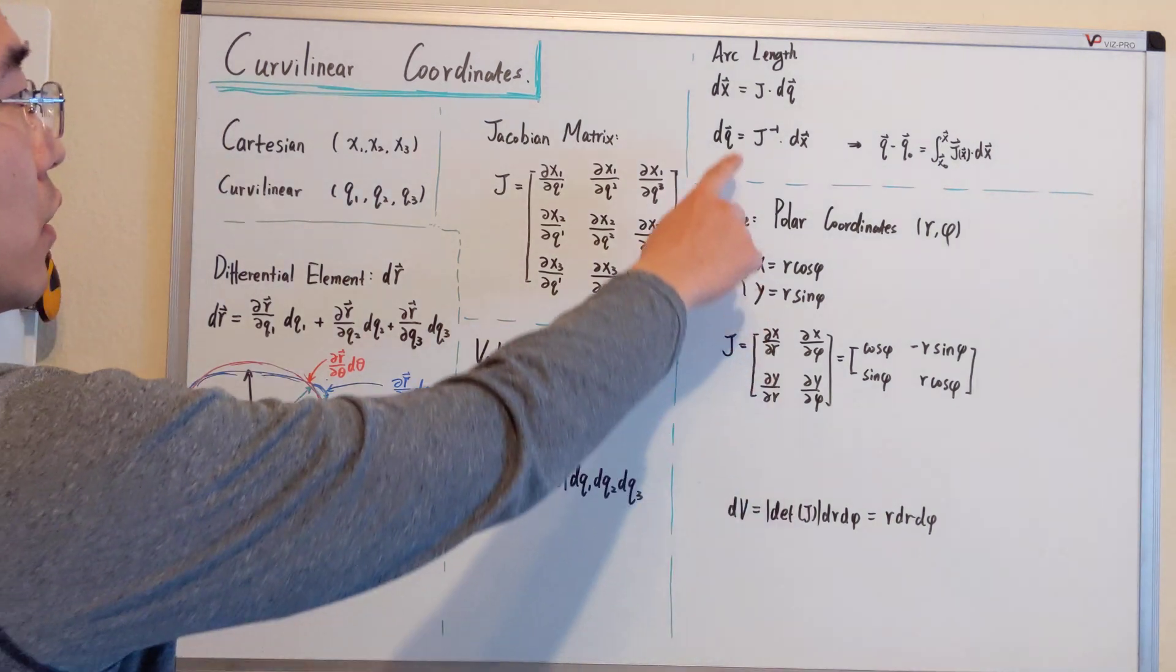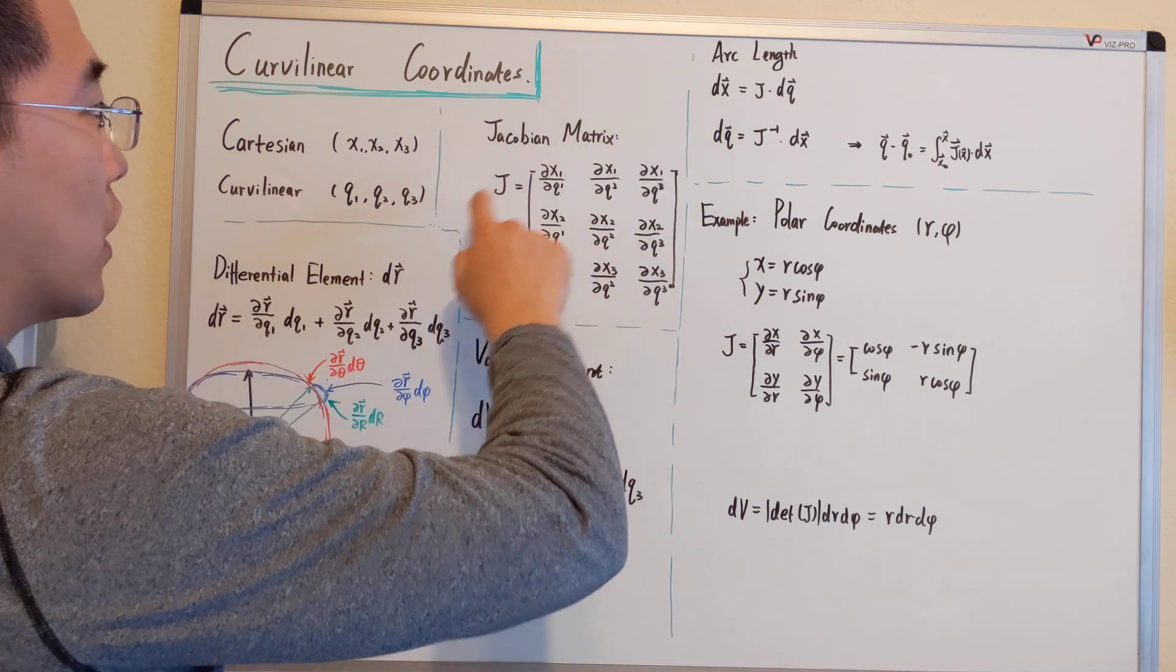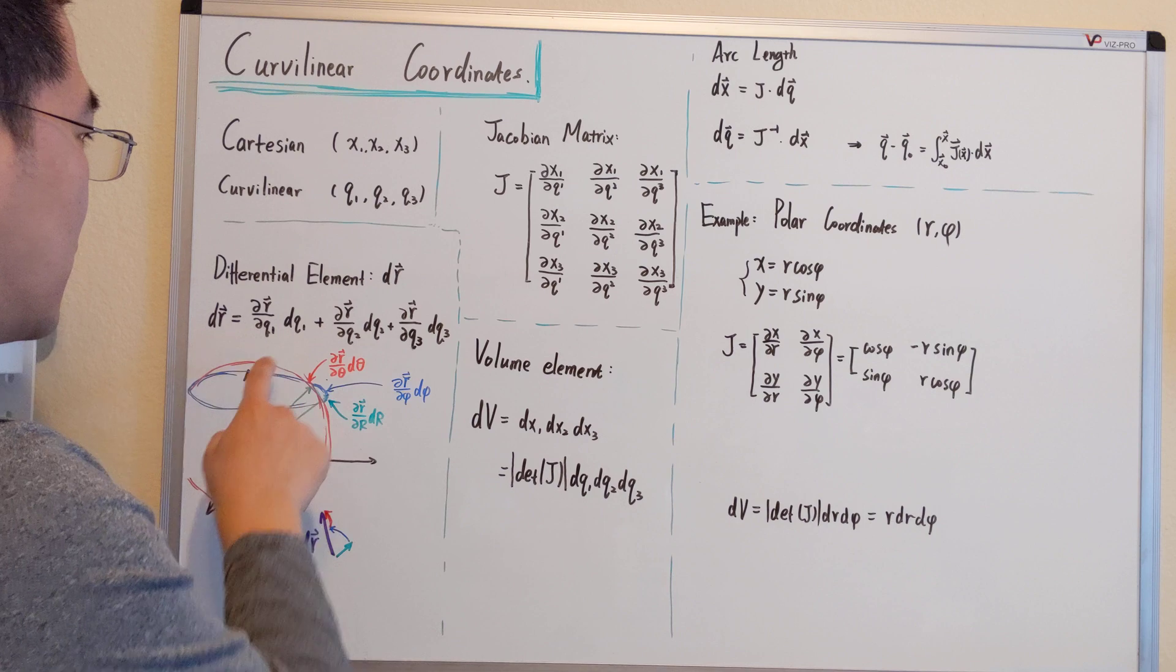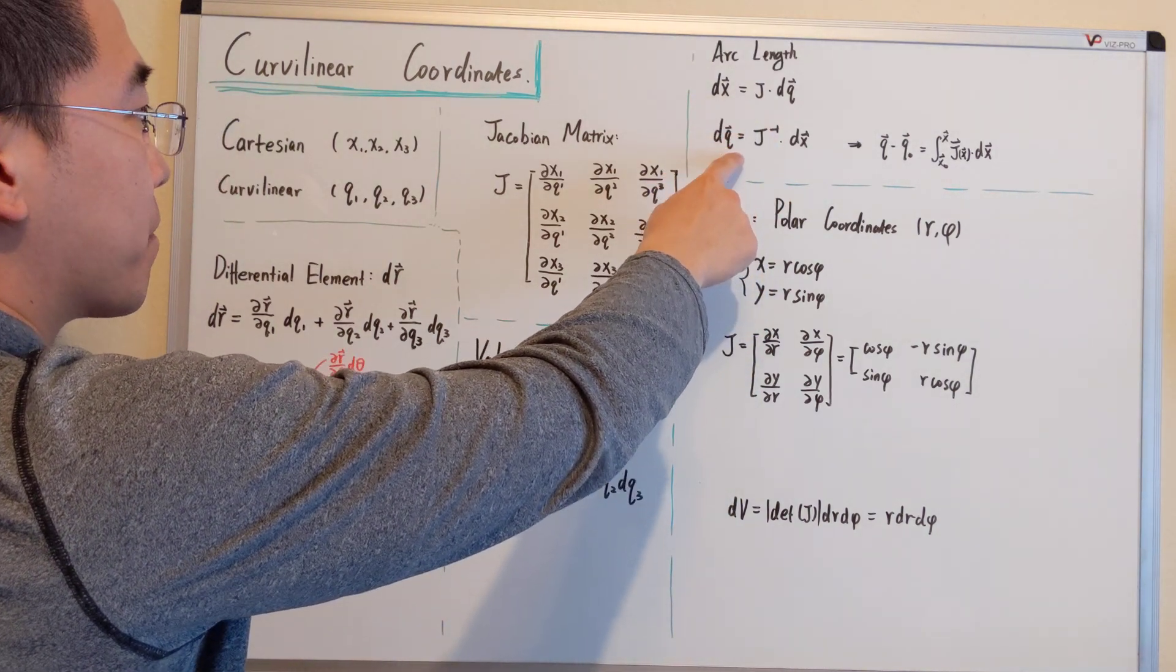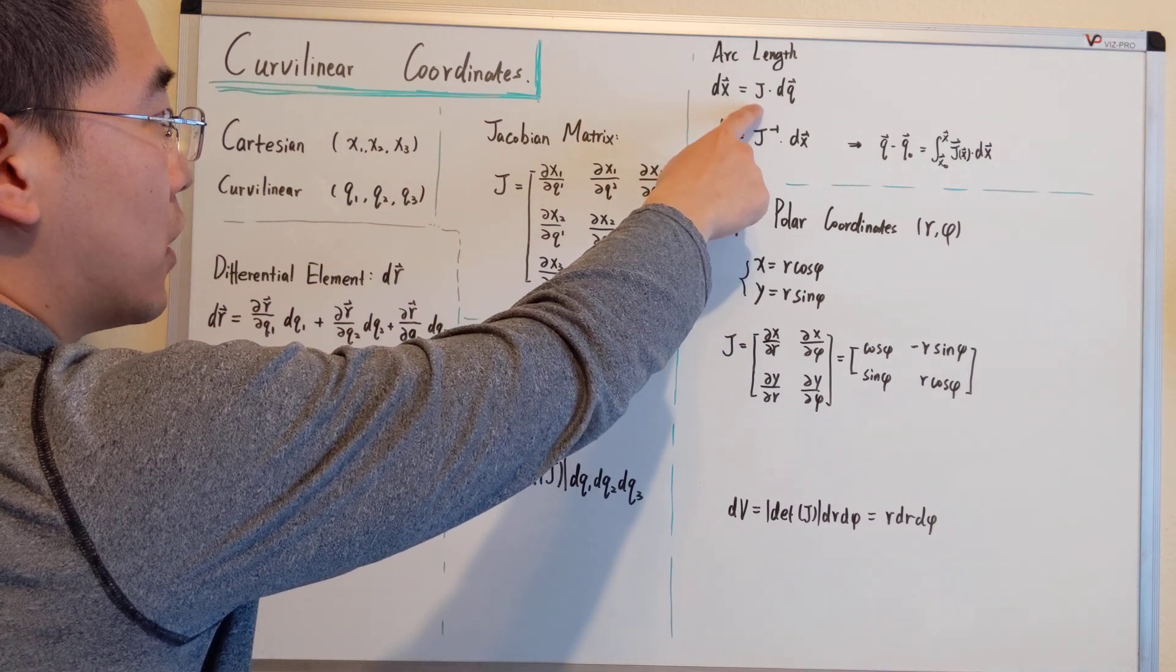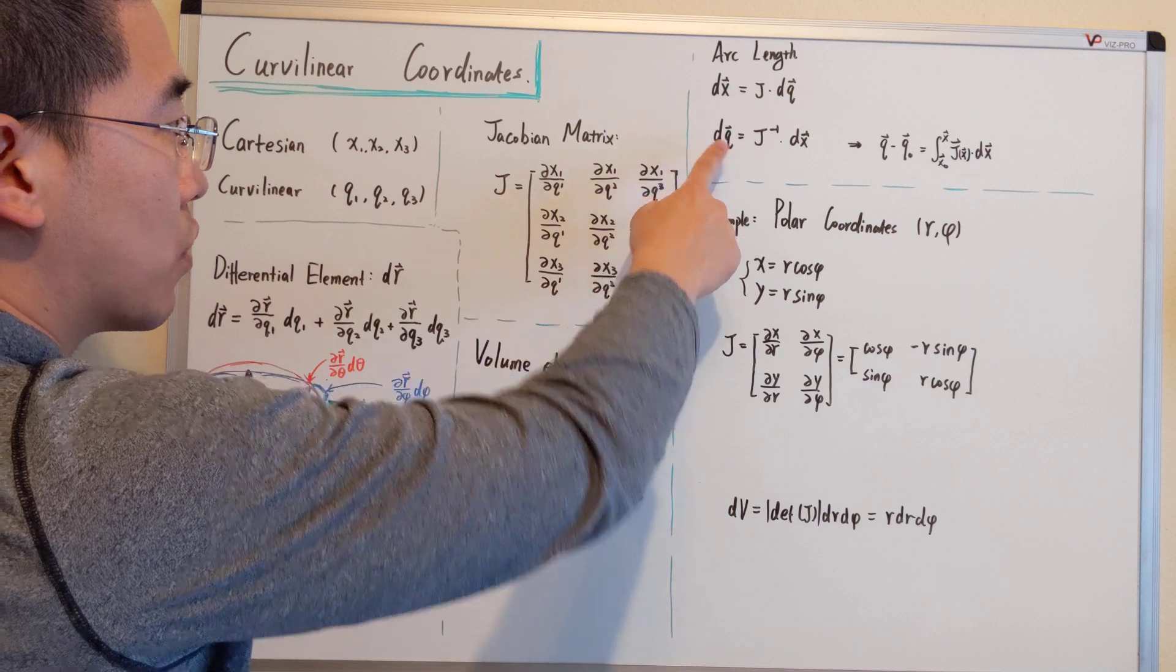For the arc length, it's a similar idea as a differential element. We have this. If we multiply J inverse on both sides, we will end up having this equation.